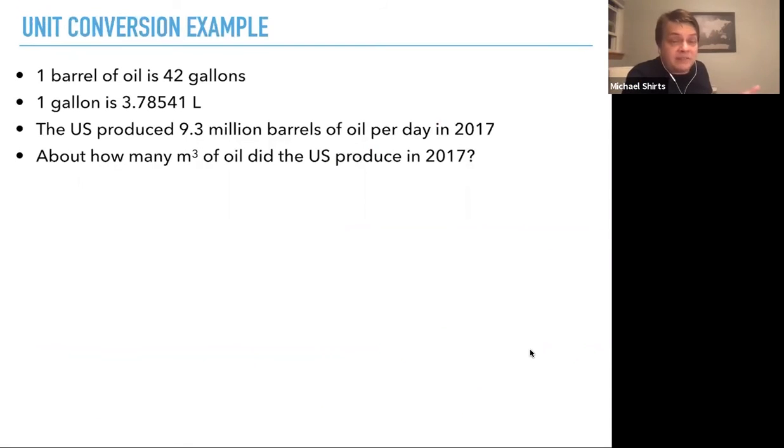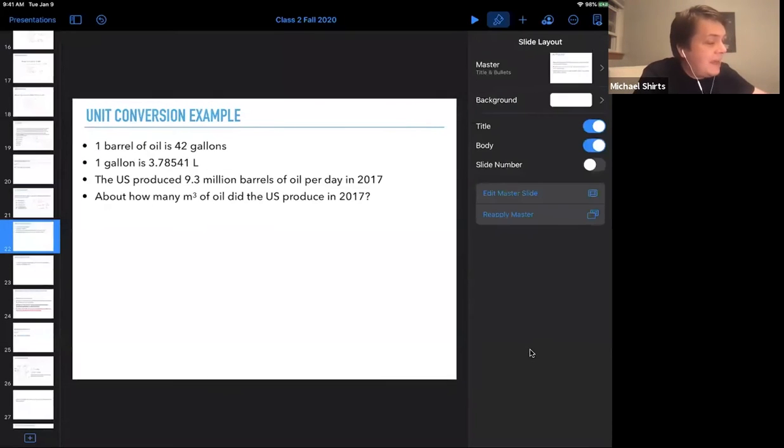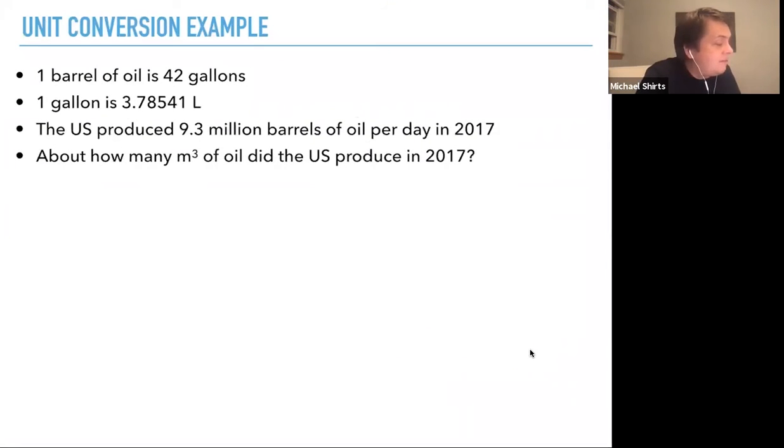There's just might be a lot of them. So let's go on to a more complicated, more realistic example, something that might actually pop up in some sort of engineering calculation that you need to do. So a barrel of oil is defined as 42 gallons and a gallon is 3.78514 liters. That's essentially a definition. Most non-SI units actually have definitions in terms of SI units, so we can treat that as exact. The U.S. produced 9.3 million barrels of oil per day in 2017. So about how many cubic meters of oil did the U.S. produce in 2017?